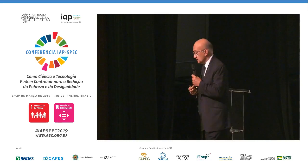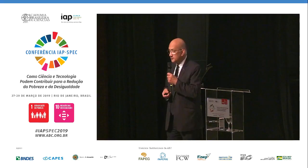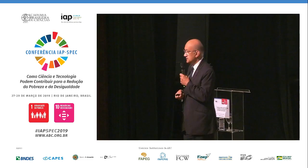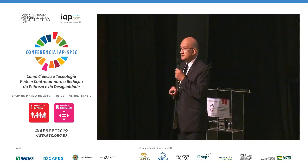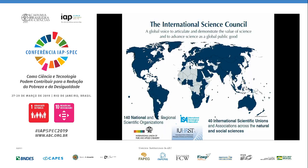I'm here on behalf of the International Science Council. It was formed as a merger between ICSU, the International Council for Science, and the International Social Science Council. ICSU had been in existence since 1931 and the Social Science Council since the 1950s. The merger took place last July, resulting in an organization comprising 140 or so national and regional organizations. We also have just over 40 international scientific associations that straddle the natural and social sciences.